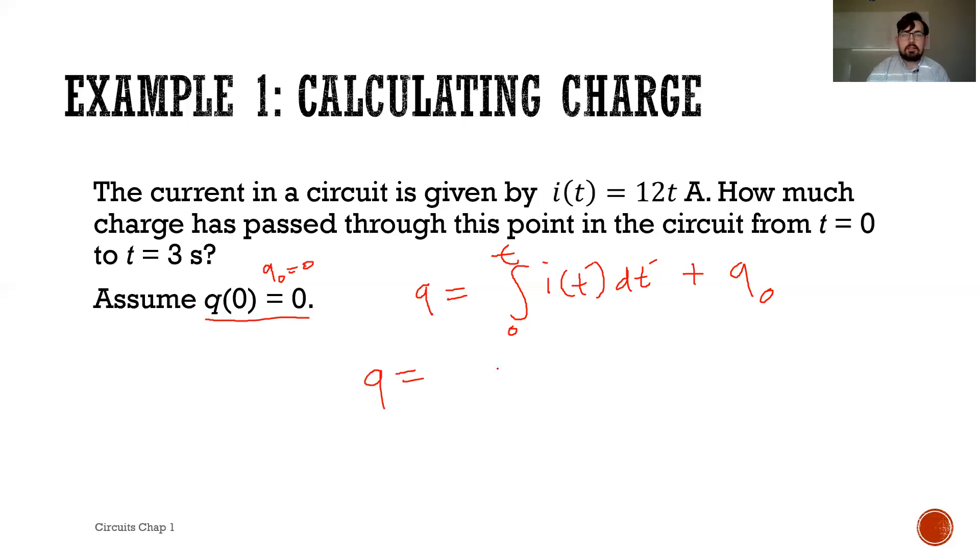We want to know this function here. We can say that looks like 12t, and we'll make it t prime integrating from 0 to t plus 0. That's going to look like t squared, t prime squared over 2 times 12, and we're going to evaluate that at 0 and t.